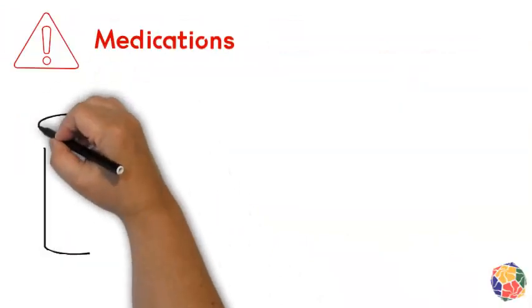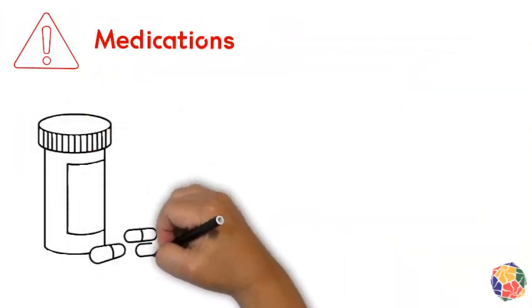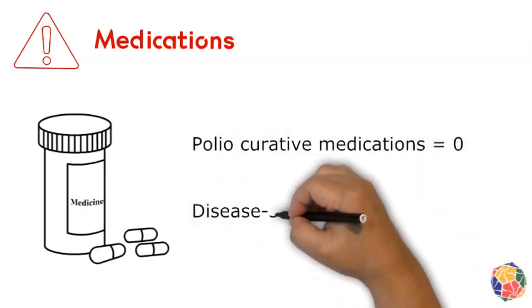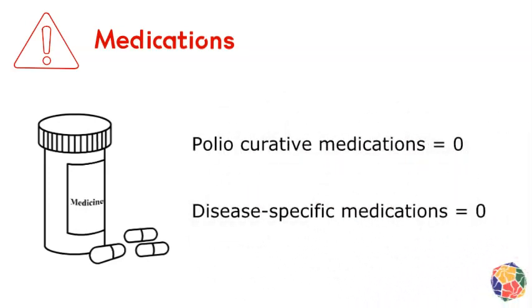Medications is the fourth area of risk. There are no medications that cure the damage from acute polio, and there are no disease-specific medications to control post-polio symptoms.